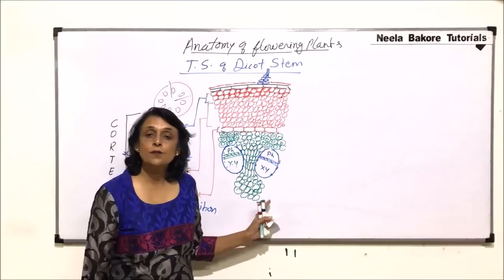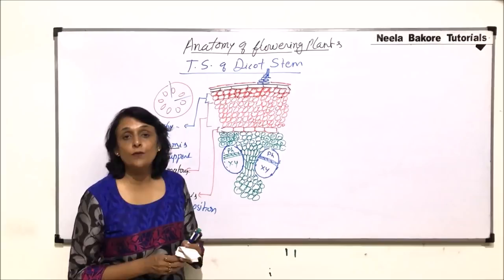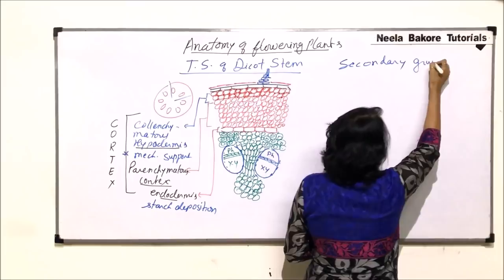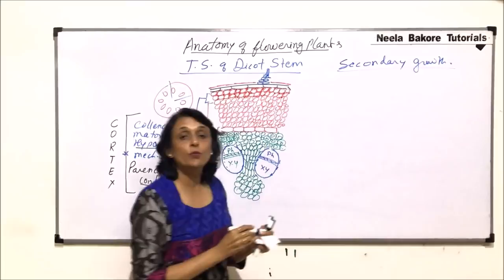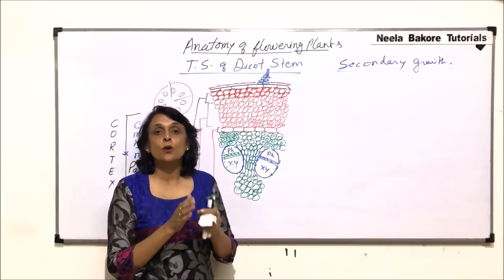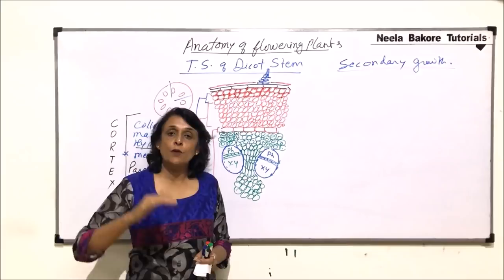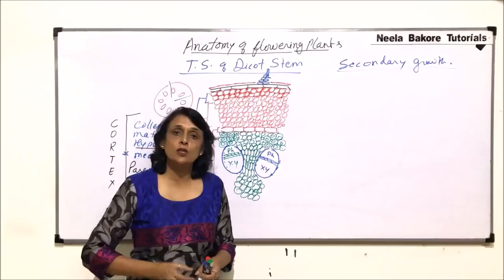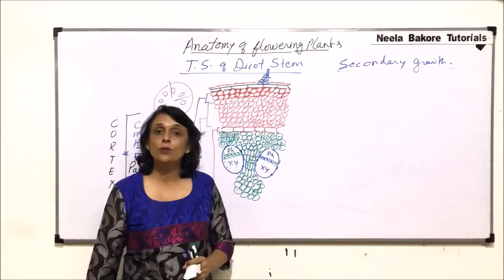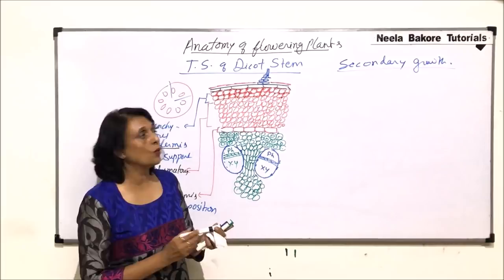In the previous part we talked about the structure of the dicot stem. In this dicot stem we also find secondary growth. There are two places where secondary growth takes place. The tissue drawn here is the primary tissue — the first formed tissue. After some time the plant is going to increase in girth, because the apical meristem is responsible for increase in height. If a plant has a slender stem and just becomes taller, that less thickness is not going to support the height of the plant, so the plant has to increase in girth. Secondary growth is responsible for increase in girth.